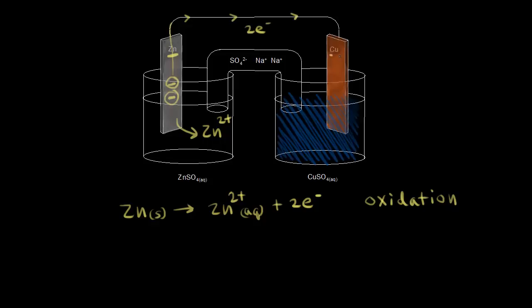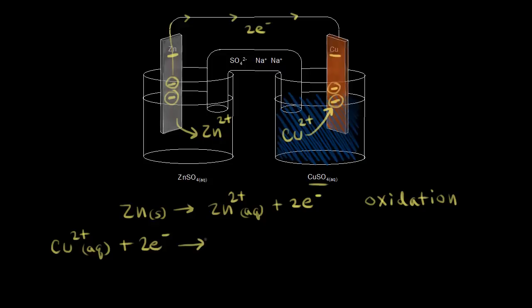Those two electrons move over to the copper electrode on the right. In solution, we have an aqueous solution of copper sulfate, so there are Cu²⁺ ions present. When those copper two plus ions come in contact with the electrons, we get a reduction half reaction: Cu²⁺ gains two electrons to become solid copper, giving an overall zero charge. Since we gained electrons, this is our reduction half reaction.